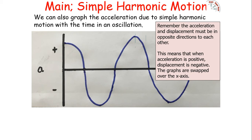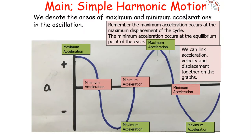In this particular instance, because we started with a negative displacement, we start with a positive acceleration. If we had started with a positive displacement, we would start with a negative acceleration. The shapes are the same but flipped across the x-axis. Maximum acceleration occurs at maximum displacement, whilst minimum acceleration occurs at the equilibrium point of the cycle.